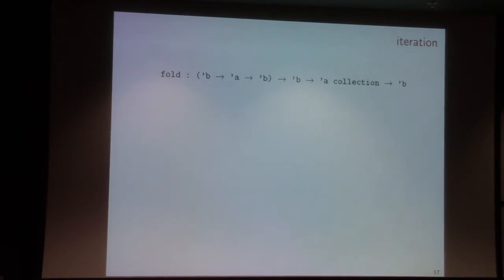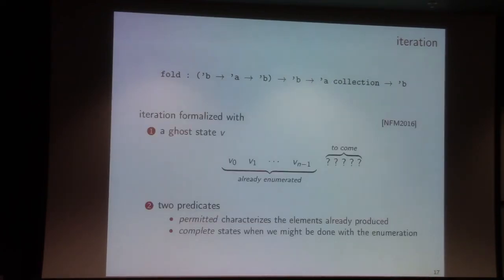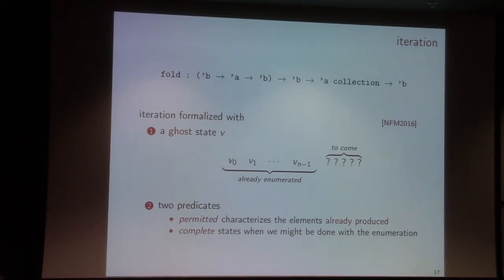There is actually a class of higher-order functions that is very important for us in OCaml programs, and that's iterators. In OCaml, we perform iteration using fold functions, which have a type where I pass a consumer function as the first argument. So fold is a higher-order function. We propose to formalize iteration as follows: we only talk about the finite sequence of elements seen so far during iteration — the "visited sequence" — and say nothing about elements still to come. In particular, this allows us to deal naturally with non-deterministic iteration and possibly infinite forms of iteration.